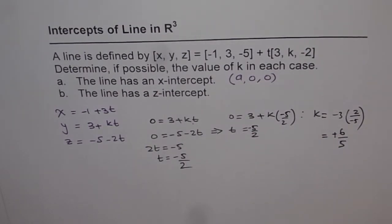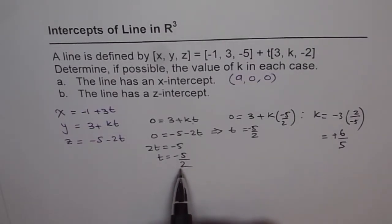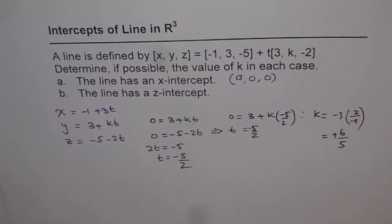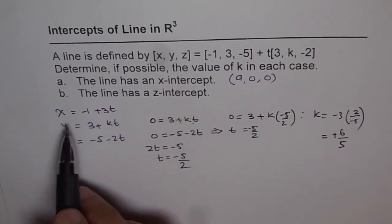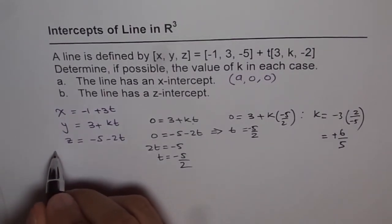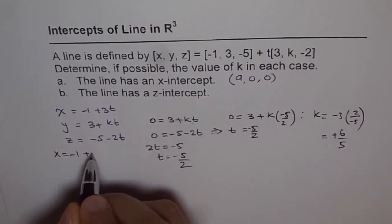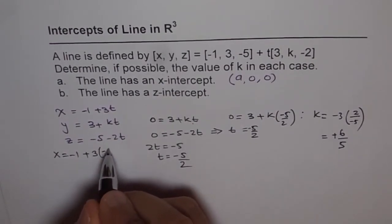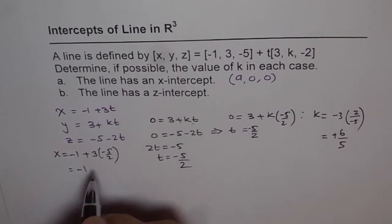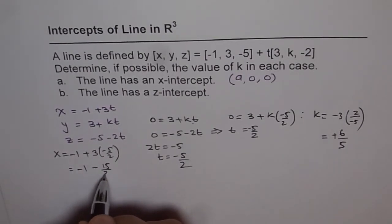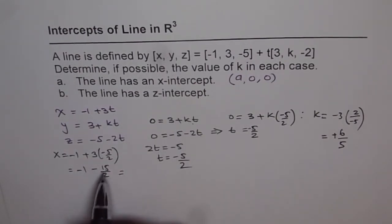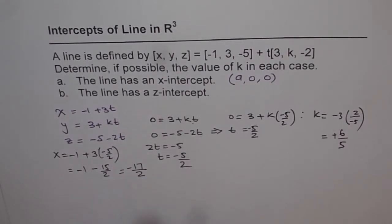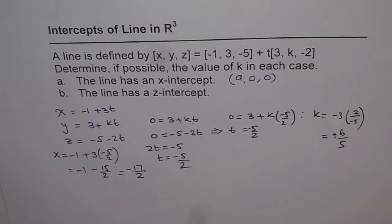So we did get a value of k. But the important thing is, that for this value of t, what should be the value of x? So let's write down the same value here for t and calculate what x is. We get x = -1 + 3 times t, and t is -5/2. Which is -1 - 15/2. And that gives us a value of x, which is -2 - 15, which is -17/2. So we get, indeed, an x-intercept.